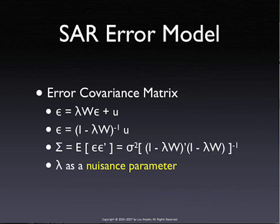The distinction between the lag model and the error model is that in the lag model, rho, the spatial autoregressive parameter, is actually a substantive parameter of interest. In the error model, the parameter is often referred to as a nuisance parameter. We're not really interested in this parameter for its own sake, but we use it to get a better estimate of the beta parameters — the actual parameters in the main model.